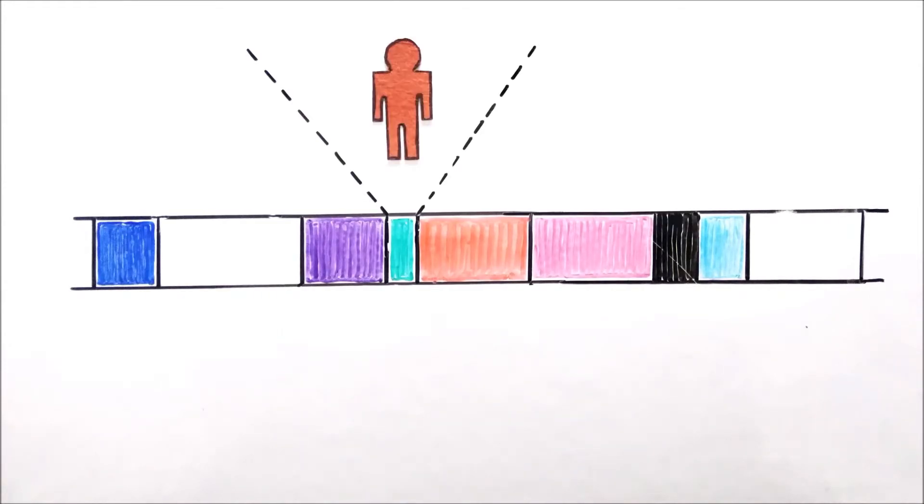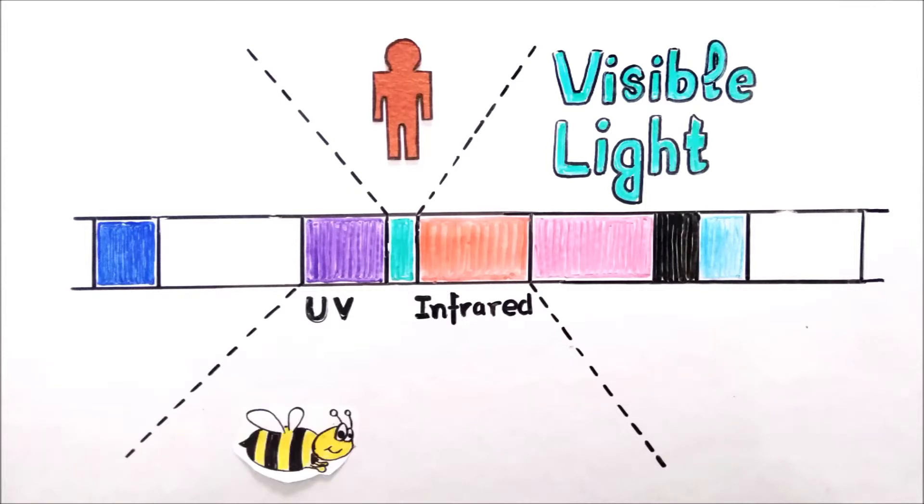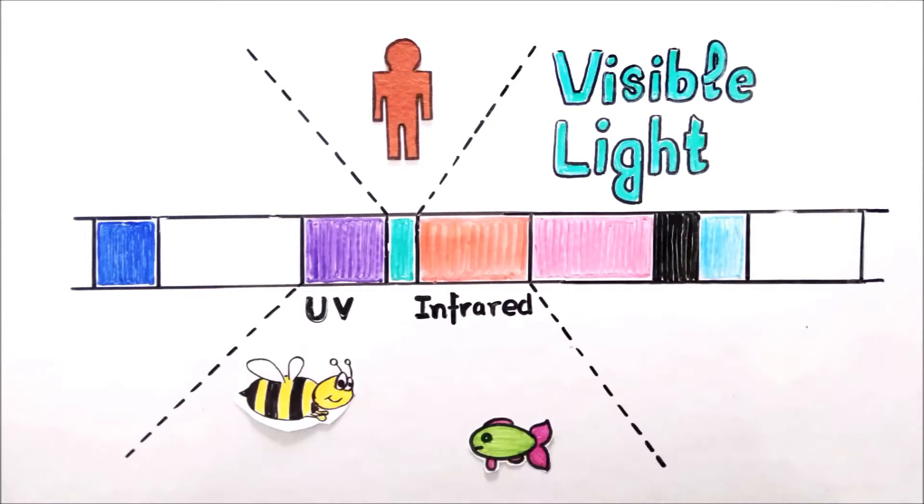And this small range is known as visible light. On the other hand, many animals have an eye which is sensitive towards the larger range than the human eye. This is why some of them can see infrared and ultraviolet spectrum too. For example, bees can see ultraviolet light and fish can see infrared light, both of which are invisible to human eyes.